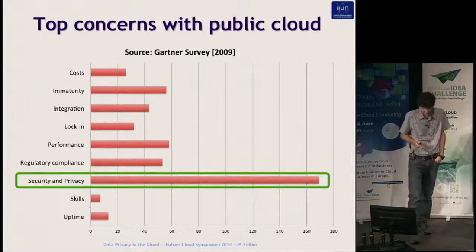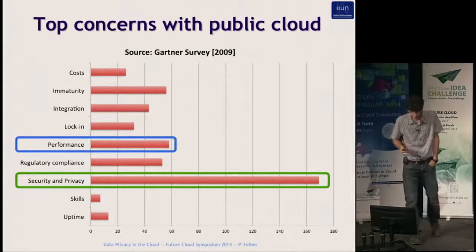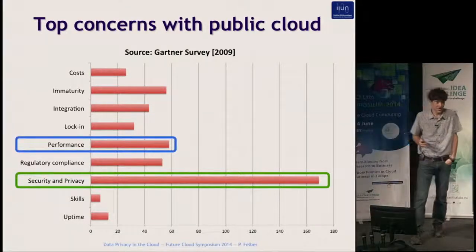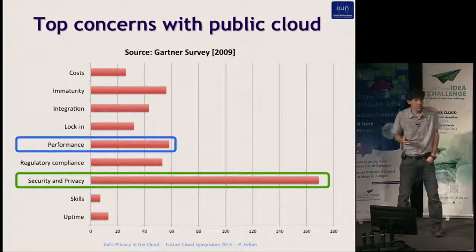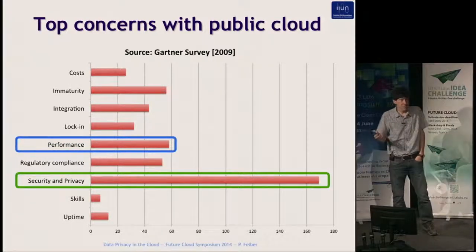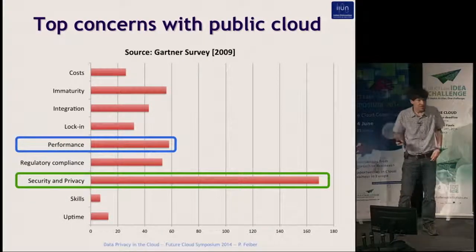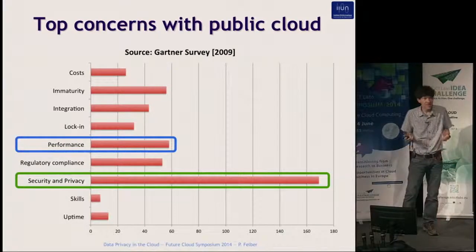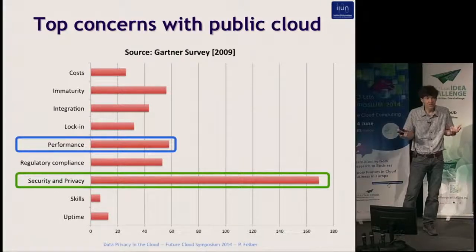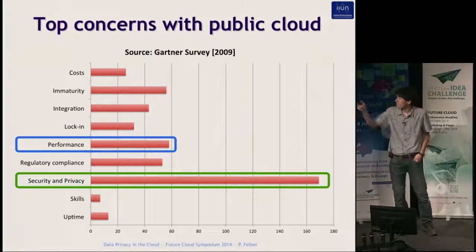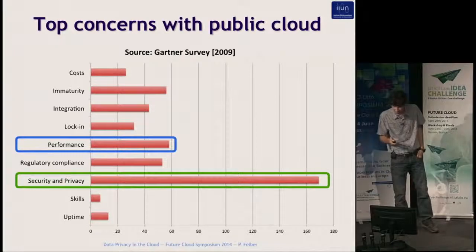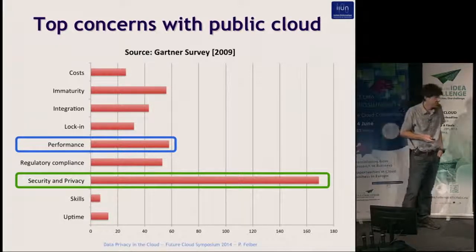A widely publicized Gartner survey asked companies about their main concerns with public cloud. By far the top response was security and privacy — companies are afraid of using the cloud because of security problems. The second concern was performance: people have the impression that you might not get predictable or good enough performance for your business.